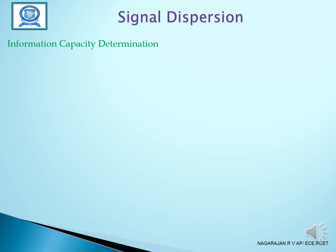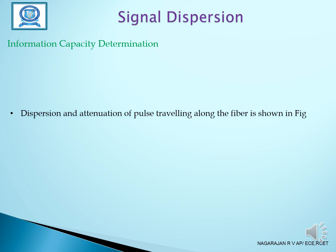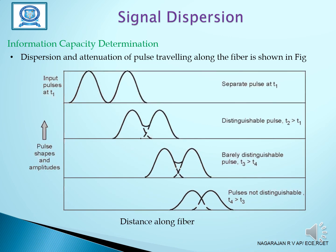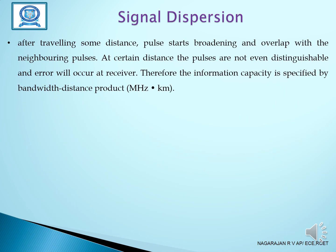Let us see information capacity determination one by one. Dispersion and attenuation of a pulse traveling along the fiber is shown in the figure. Along the fiber distance, attenuation and dispersion both occur. In the first diagram, separate pulses exist at T1; in the second, T2 is greater than T1; in the third, T3 is greater than T2. After traveling some distance, pulses start broadening and overlap with neighboring pulses. At a certain distance, the pulses are not even differentiable and errors will occur at the receiver.